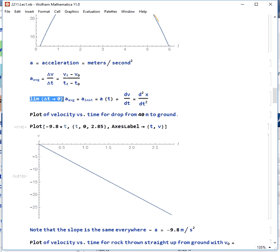If we take the limit where the delta t goes to zero, the average acceleration becomes the instantaneous acceleration. This is just the time derivative of velocity or the second time derivative of position.